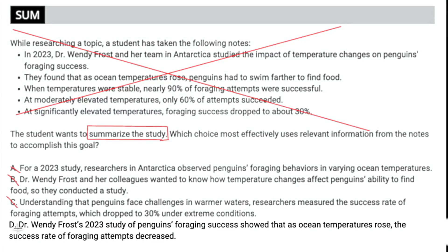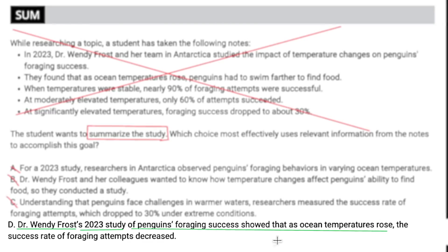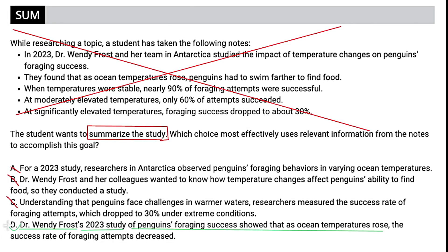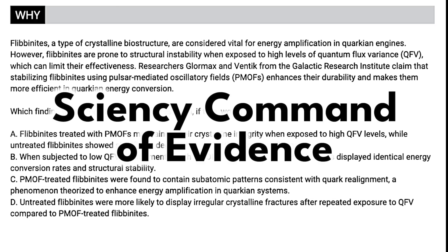Looking at choice D, we get Dr. Wendy Frost — a name, which is better than just 'researchers.' We get the year of the study, what the study was doing, and we get that the success rate of foraging attempts decreased as ocean temperatures rose. That is the actual result. Our answer is choice D.